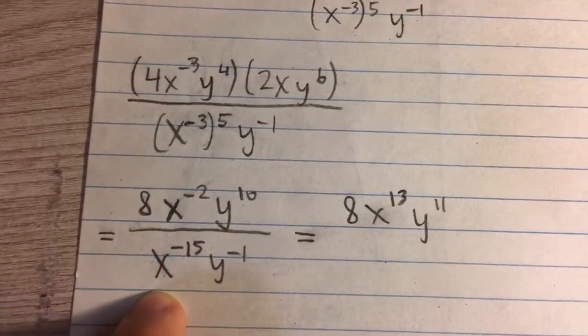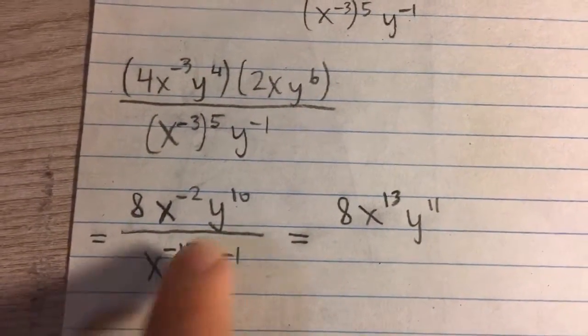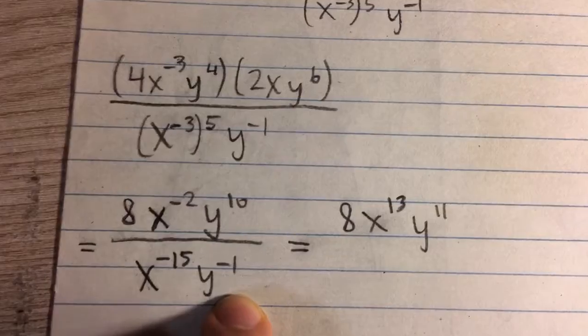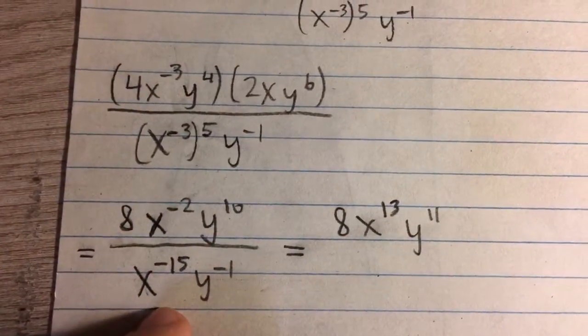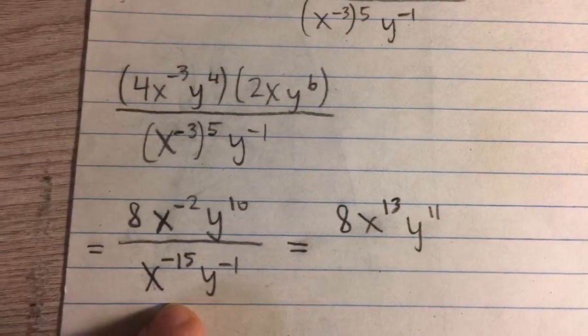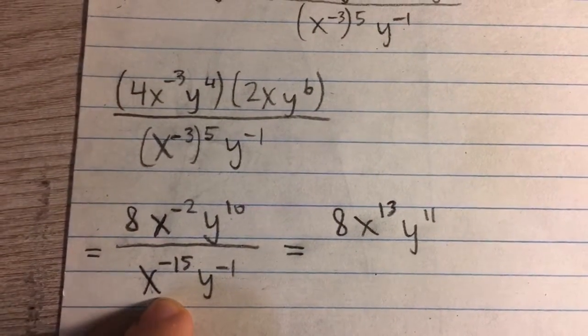Now you can see we have a power of x over a power of x, and a power of y over a power of y, which we can simplify. When we multiply exponents we add them. When we divide exponents, we subtract.